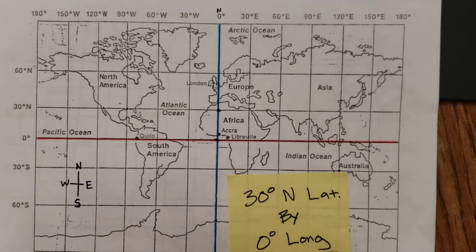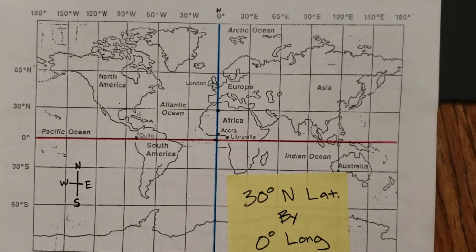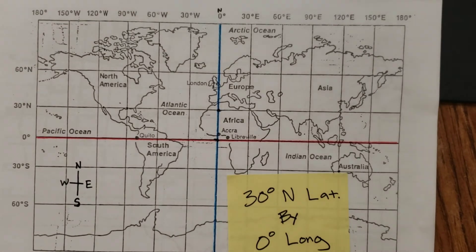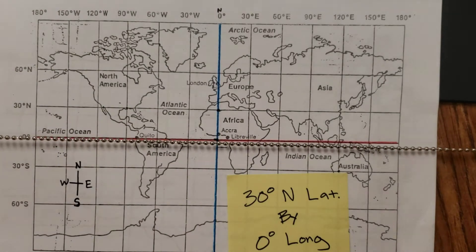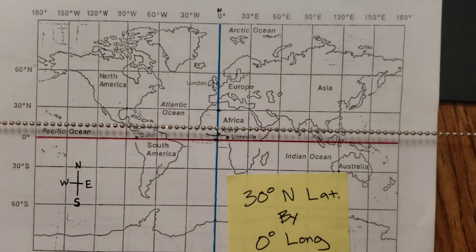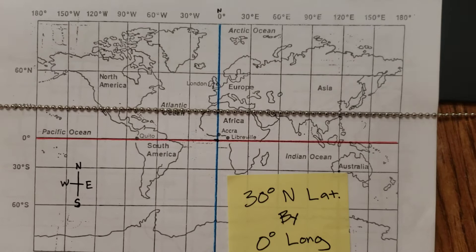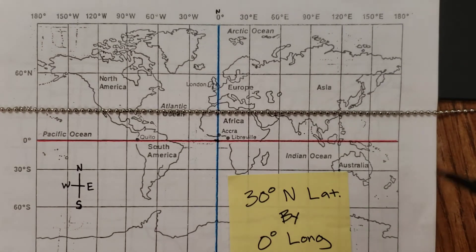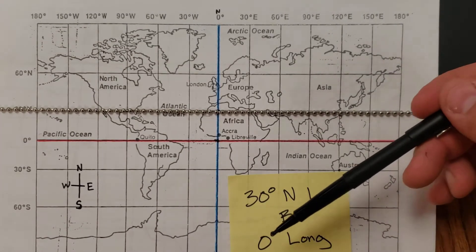Can this happen? Can you have 30 degrees north latitude? Let's think about what latitude is. Latitude is the ladder. That's the equator. 30 degrees north. All right. Right there.